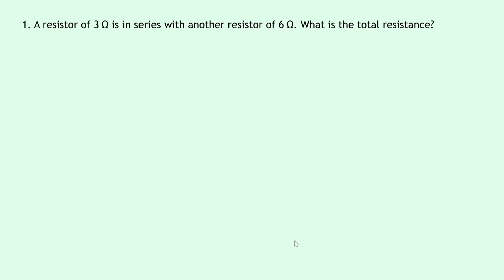Question one says that a resistor of 3 ohms is in series with another resistor of 6 ohms. What is the total resistance? Well, writing down what we know from the question here, we're trying to find RT. I'm going to make R1 the 3 ohms and R2 the 6 ohms, and I can stop at R2 because I've only got two components here.